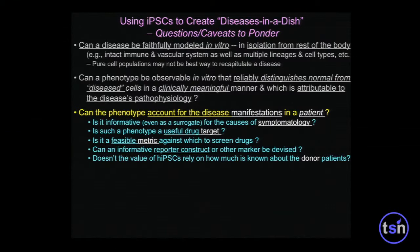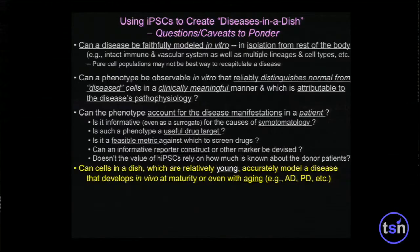Joe indicated that some of the things you actually see in cardiomyocytes in a dish do reflect what you might see on an EKG. Is it the same for the nervous system or for the blood system? Even if you find a phenotype that can't account for the symptoms of the actual patient, is it still a reasonable surrogate? Can you use it for drug discovery? Can it be a metric, or can you construct it so that it triggers a reporter that's also clinically informative?